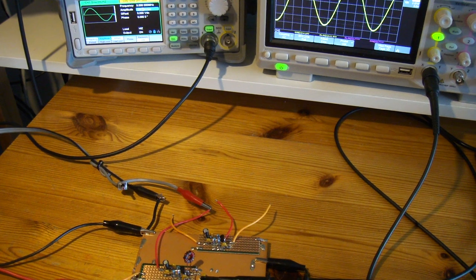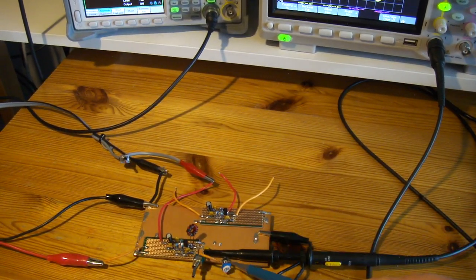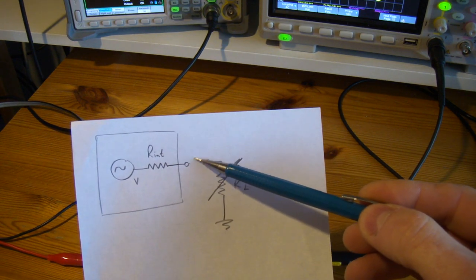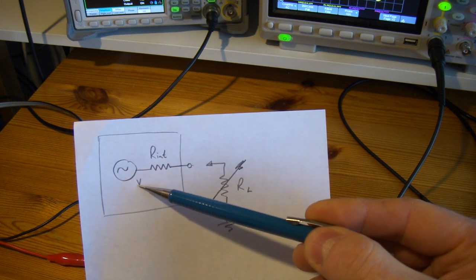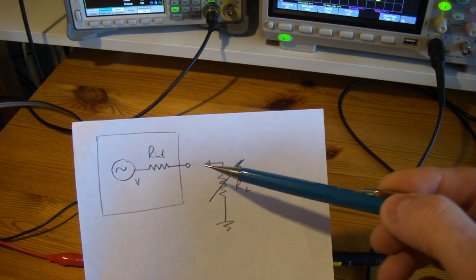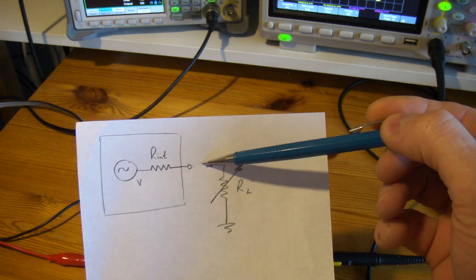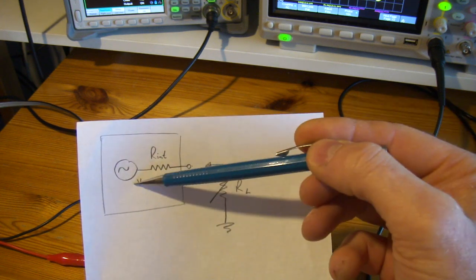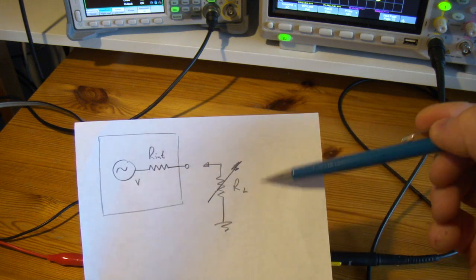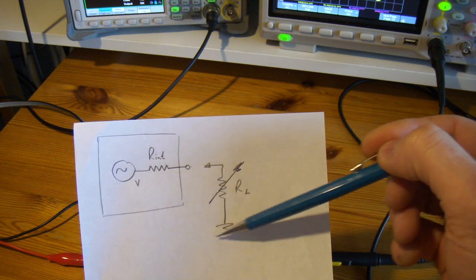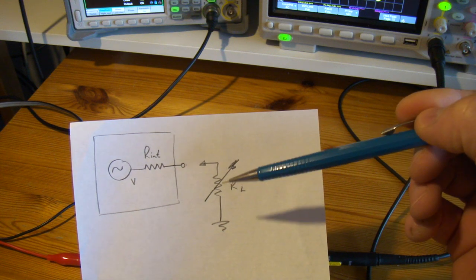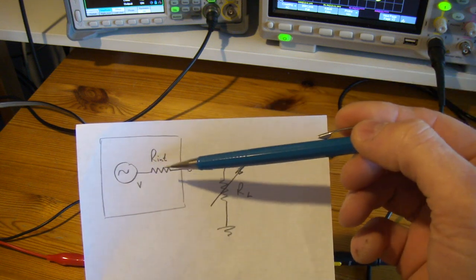I'm going to vary that until I have a voltage at this point here of half of what my original voltage was. I'm going to vary it until I get down to 6 volts. Once I get to 6 volts, because it's a voltage divider, this resistance must be the same as this resistance. I can then take this trim pot out of circuit, measure its resistance, and that's what the internal is.